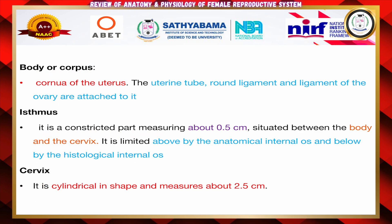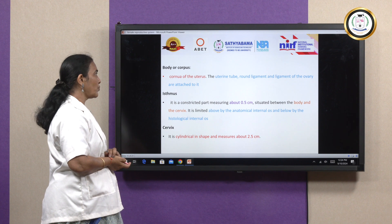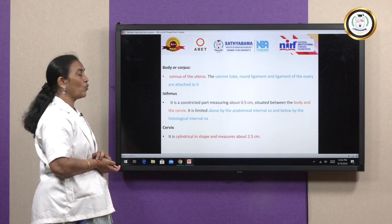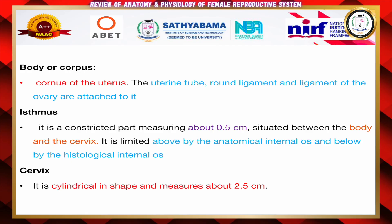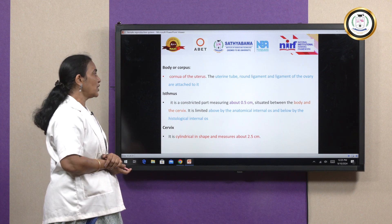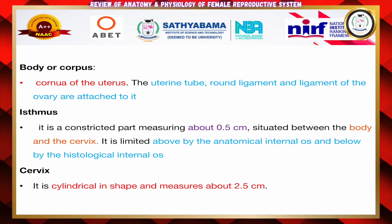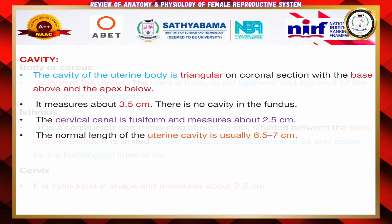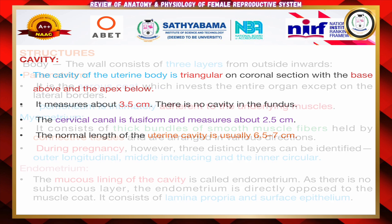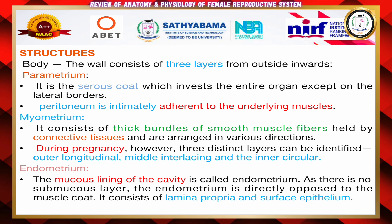The uterus has the following parts: body or corpus, isthmus, and cervix. The cornua of the uterus is the uppermost part of the fundus, where the uterine tube, round ligament, and ligament of the ovary are attached. The isthmus is a constricted part measuring 0.5 centimetres, situated between the body and the cervix, limited above by the anatomical internal os and below by the histological internal os. The cervix is cylindrical in shape, measuring 2.5 centimetres, with a triangular cavity — base above and apex below — measuring 3.5 centimetres. The cervical canal is fusiform at 2.5 centimetres, and the uterine cavity is 6.5 to 7 centimetres.